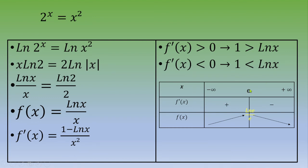So you've got at the end this table of variation. This is e, and the value at e is ln(e)/e. So now you would like to know how many solutions.